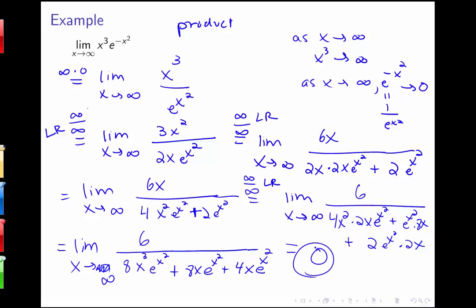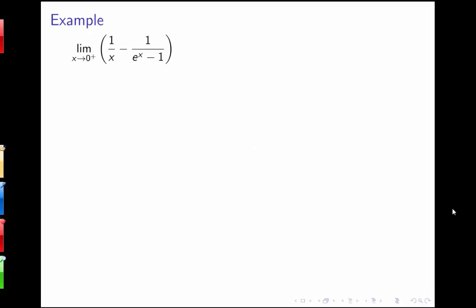Now let's look at something that's a difference. I have the limit as x goes to 0 from the right of 1 over x minus 1 over (e to the x minus 1) — where the minus 1 is not in the power, but e to the x and then minus 1. As x goes to 0 from the right, 1 over a small positive number gives infinity, and e to the x approaches 1, so the denominator e to the x minus 1 is a small positive number, also giving infinity. So I have the indeterminate form infinity minus infinity.